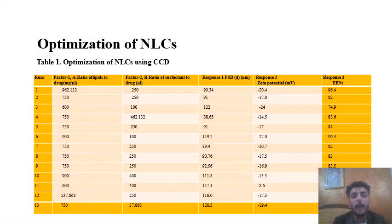These are the optimization of NLCs using CCD. On the basis of central composite design, we got 13 runs. The first factor is ratio of lipids to drug, second factor is ratio of surfactant to drug, and then the three responses: particle size, zeta potential, and entrapment efficiency.